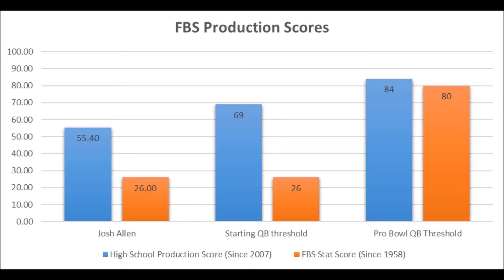Starting with the first pick, we have Josh Allen, quarterback out of Wyoming. I've done a lot of videos on Josh Allen so I don't want to get too deep into things, but the basics are: when it comes to his high school and FPS production data, there's never been a long-term starting quarterback to have as low a high school production score as Josh Allen since the 2007 NFL draft class. There's only been a handful of long-term starters to have as low an FPS score since the 1958 NFL draft class — guys like Jake Delone and Josh McCown. Only about two quarterbacks have had a chance to become successful with as low an FPS production score, and both were project quarterbacks coming out.